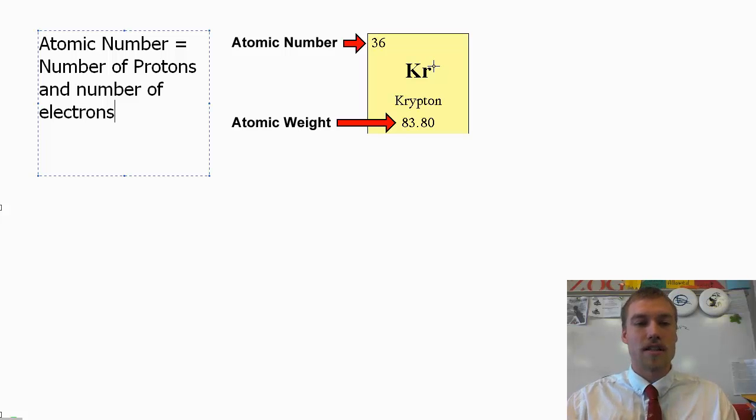Also, we can figure out that this is the number of electrons in a neutral atom. So this is in a neutral atom where you have no charge. And the reason why is because if we have an atomic number of 36, that means we have 36 protons, which means we have a positive charge of plus 36.